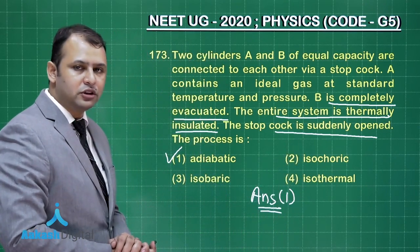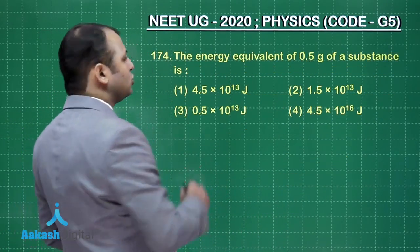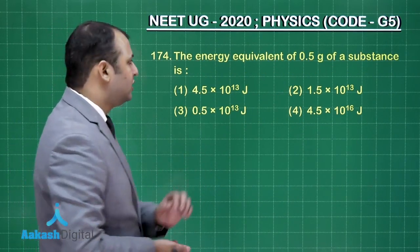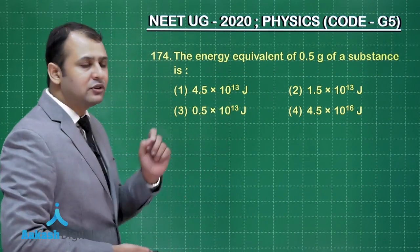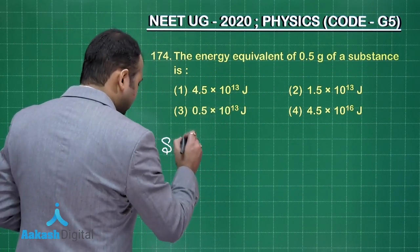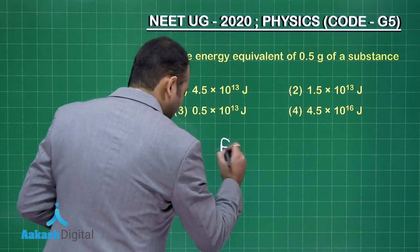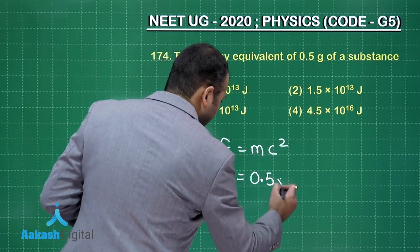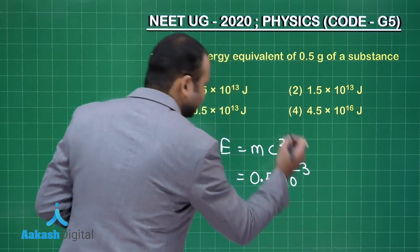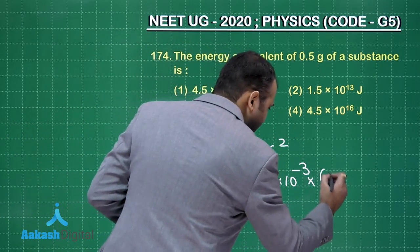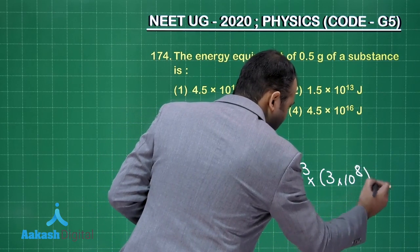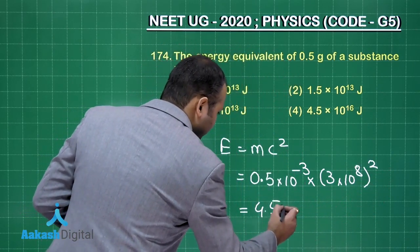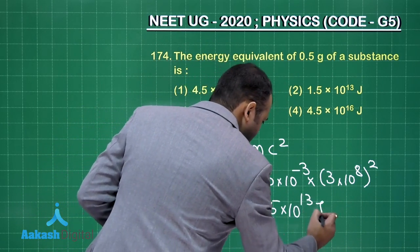I hope you have understood this question. Now let's move on to the next question. Question number 174 is an easy question with mass-energy equivalence. As per the question, the energy equivalent of 0.5 gram of a substance is — we can easily solve this by the equation E equals mc². So it is 0.5 into 10 to the power minus 3 kg, into 3 into 10 to the power 8 whole squared. The answer would be 4.5 into 10 to the power 13 joules.